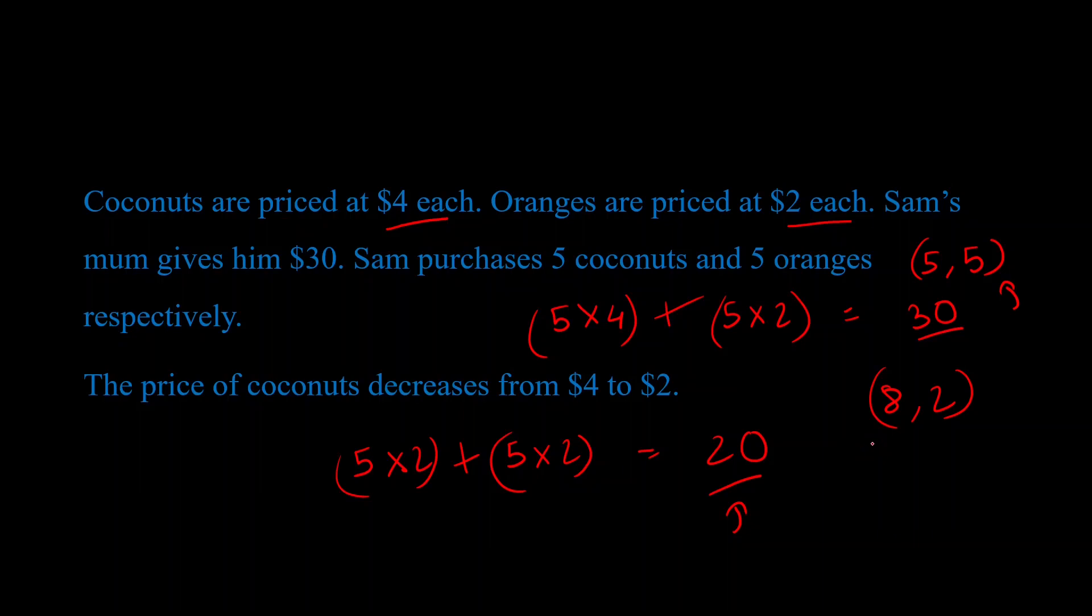The idea behind purchasing power remains the same, is that now Sam has $20, which is just enough money, so that he can just afford his original bundle. But now he doesn't do that, he has a different demand.